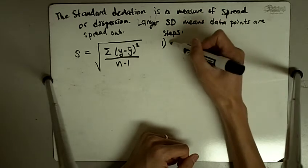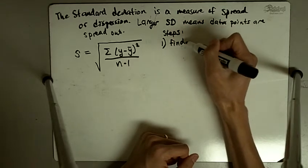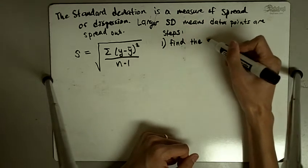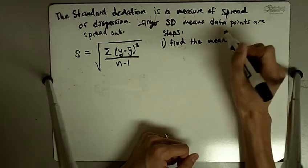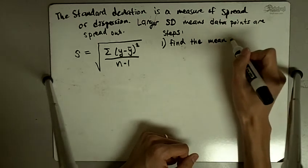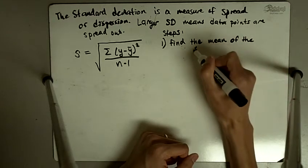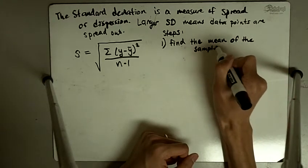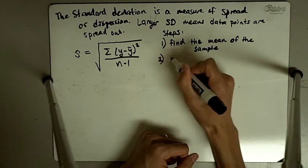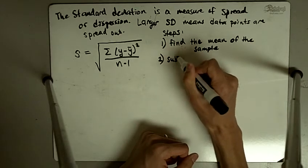So the steps are: 1, find the mean of the sample. Step 2 is subtract the mean from each point.